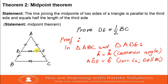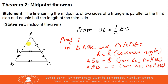Similarly, angle AED is equal to angle C. The reason is they are corresponding angles because DE is parallel to BC. Angle AED is this angle here — it is equal to angle C. They are corresponding angles. Remember, corresponding angles make an F shape. So we were able to prove that the angles are equal.